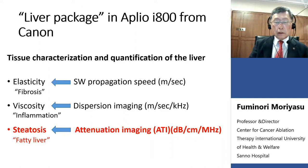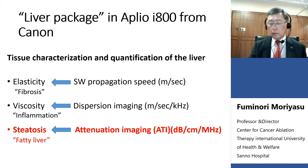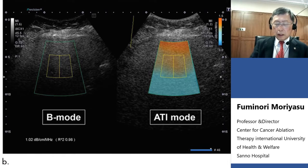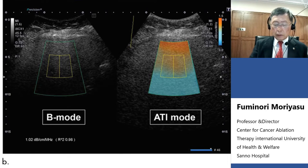This is the liver package in the Aplio i800. Steatosis is also measured quantitatively by using attenuation imaging. This is a case of ATI measurement. In this case, attenuation is demonstrated as 1.02 dB per centimeter per megahertz. ATI is very simple and provides quantitative information.